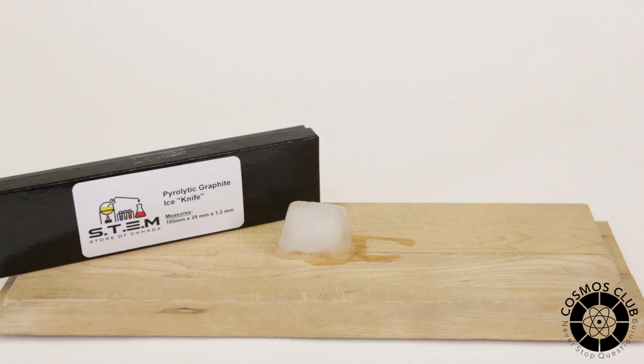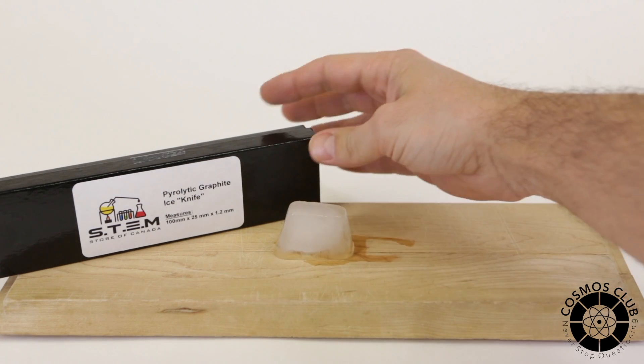We're going to have a look at a very unique substance, graphene. And I have a graphene knife from the Stem Store of Canada, which is pretty neat. This is a very unique substance. Let's have a look.